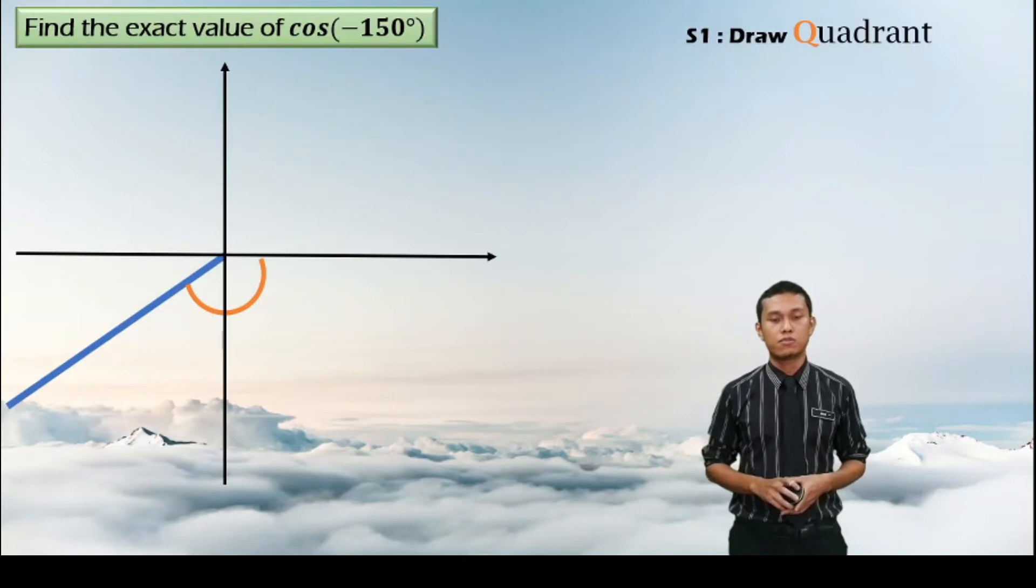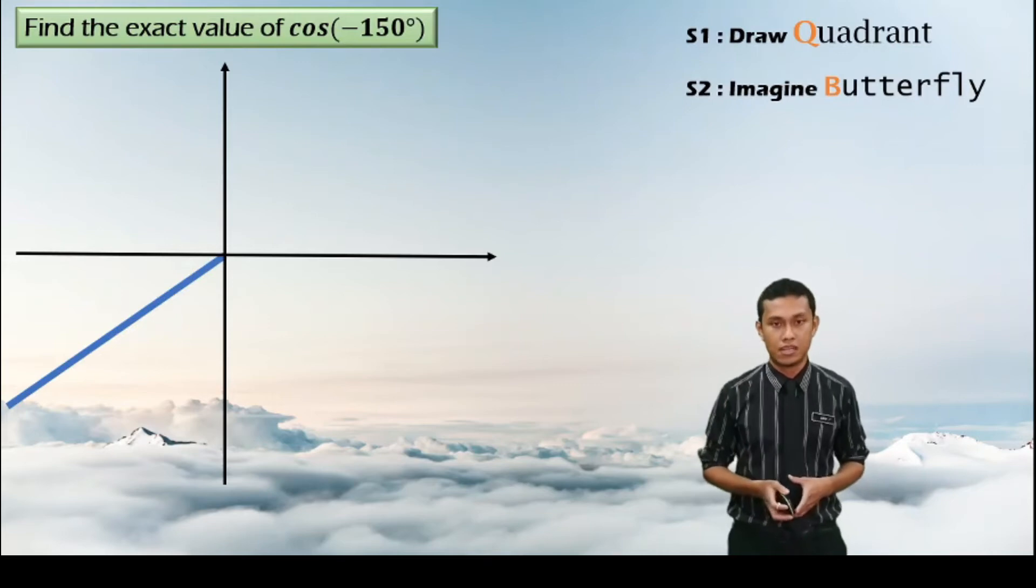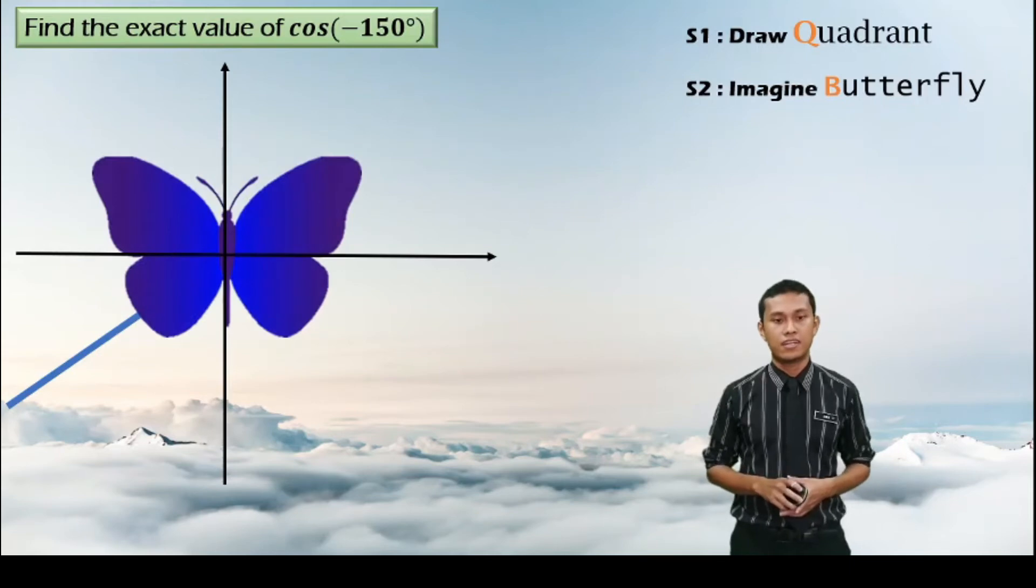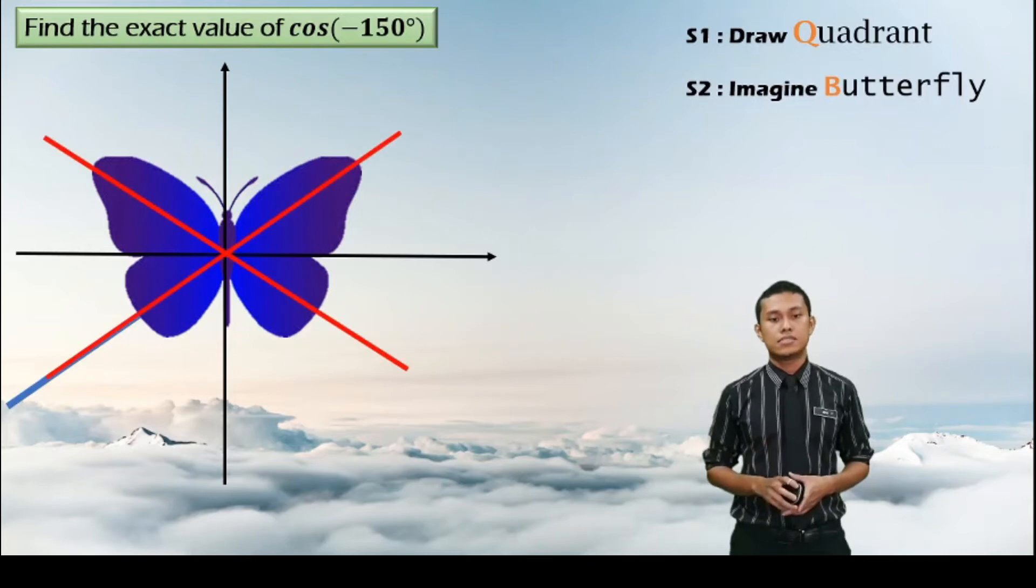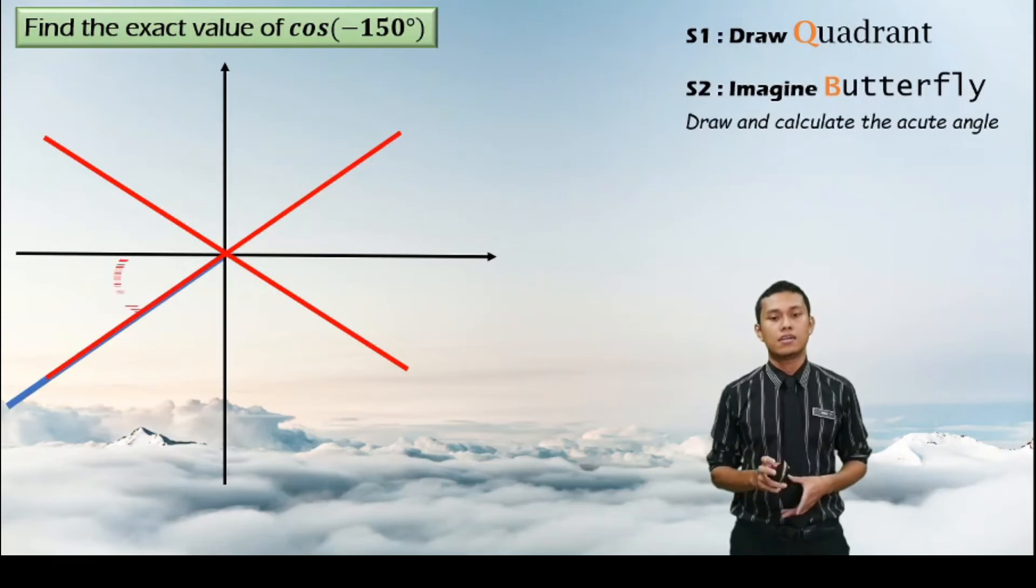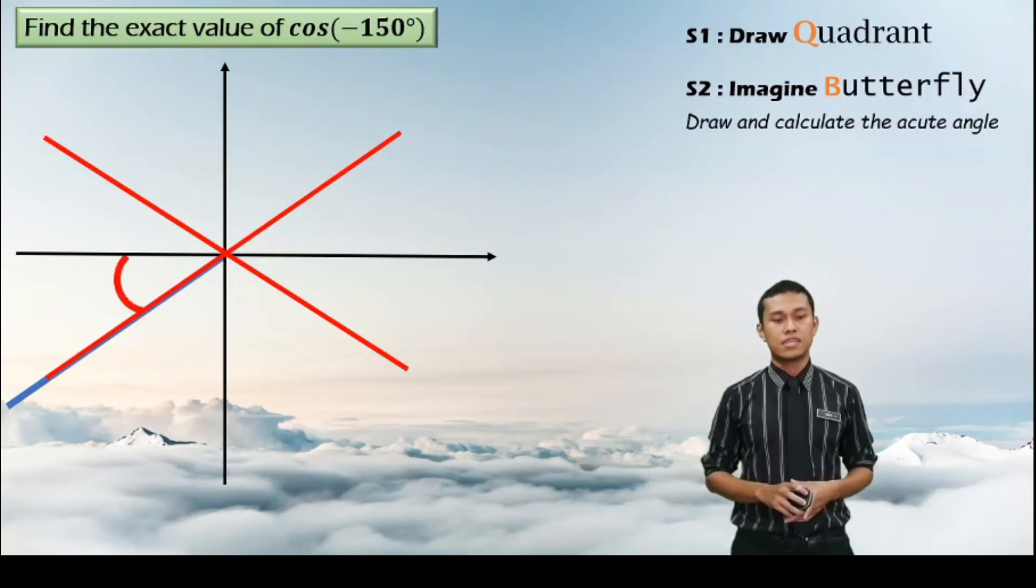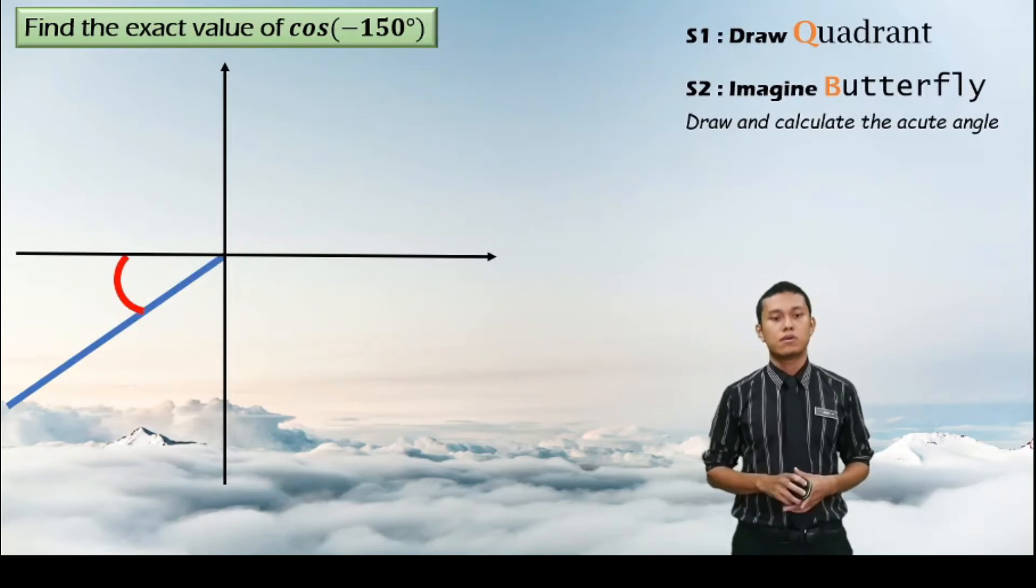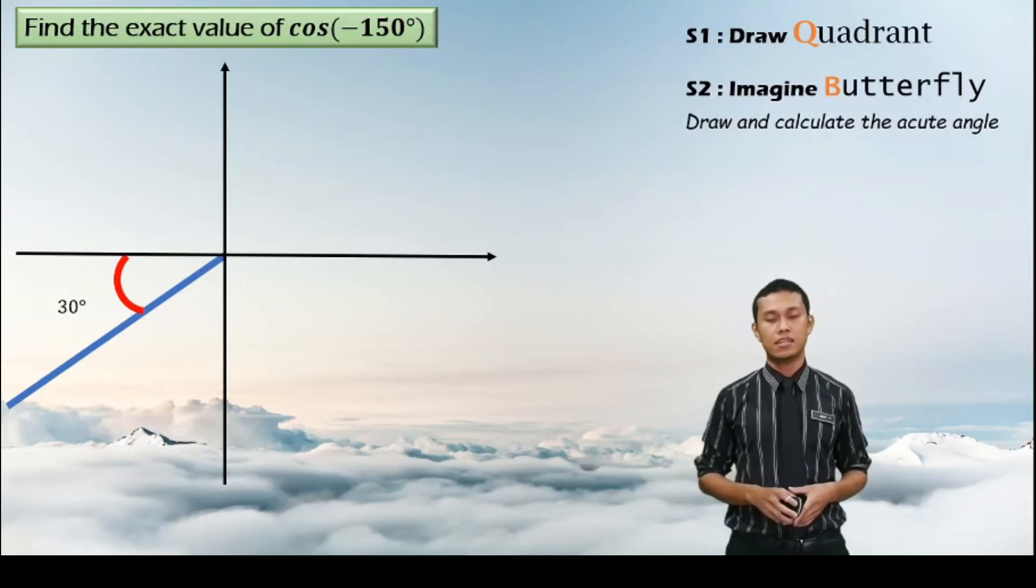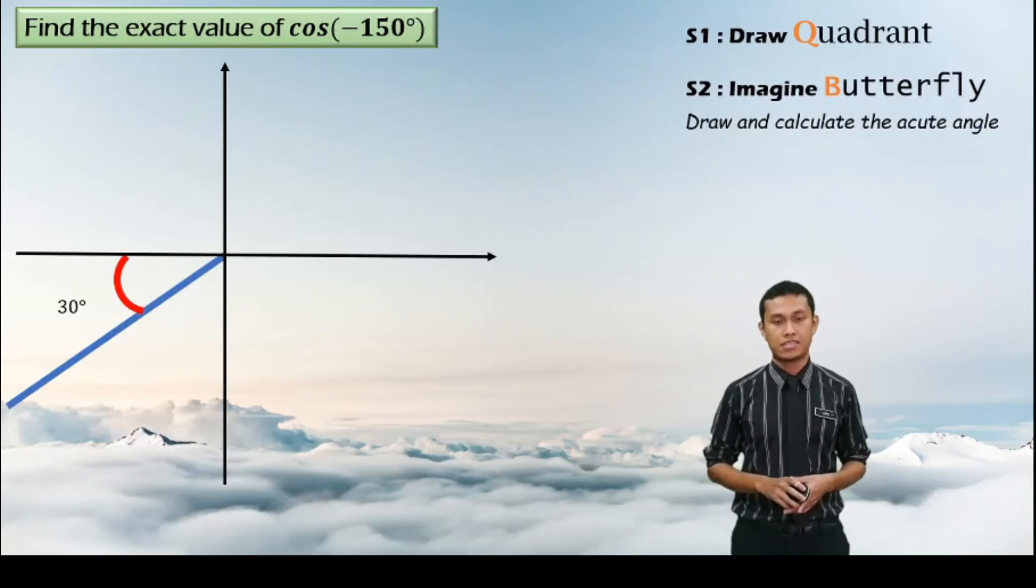So to find the acute angle, we need to imagine the butterfly. This is our second step. So imagine there is a butterfly on the axis in the middle of the axis. So you choose the angle which is inside the wing of the butterfly, which is this angle here. So this angle, you need to calculate the value. So we have 180 minus 150 and you get the value of 30 degree. So this is the angle that we will use to calculate the exact value.